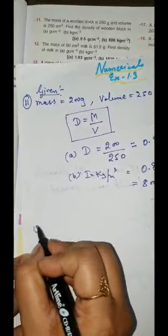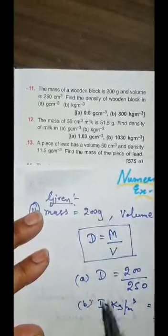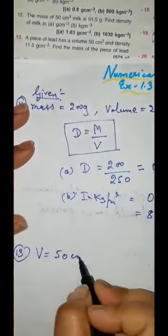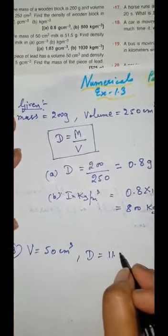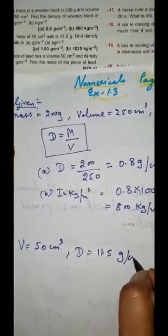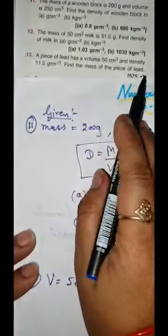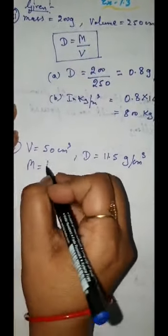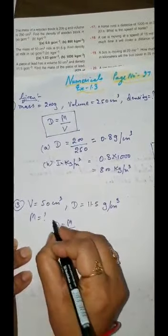Question number 13. A piece of lead has a volume of 50 centimeter cube. Volume is 50 centimeter cube and density is 11.5 gram per centimeter cube. Find the mass of the piece of lead. What we have to find? We have to find mass.